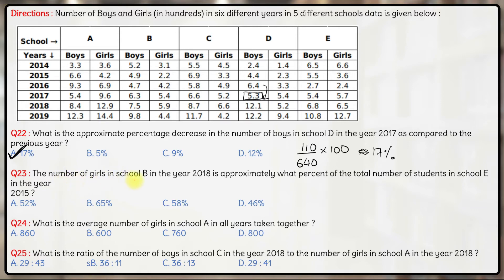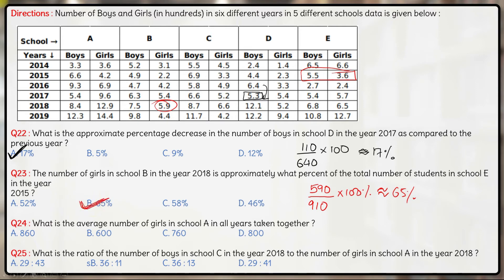In the next question, the number of girls in school B in the year 2018 — school B girls in 2018 is 5.9, which is 590 — is approximately what percentage of the total number of students in school E in 2015? Total students in school E in 2015 will be 9.1, which is 910. This effectively becomes 590/910 × 100%. Approximating: 60/90 = 2/3 ≈ 66%, and the precise calculation gives approximately 65%. The only option near 66% is 65%. Hence the answer is Option B: 65%.